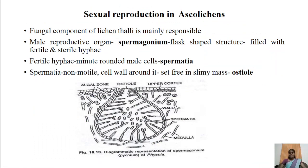Coming to sexual reproduction in case of ascolichens. Ascolichens are a group of lichens where the fungal component belongs to the class Ascomycetes. In ascolichens, the fungal component of the lichen thallus is mainly responsible for sexual reproduction. The male reproductive organ is referred to as spermogonium, which is a flask-shaped structure filled with two types of hyphae: sterile hyphae called paraphyses and fertile hyphae.